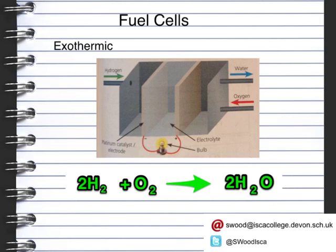Now we need a bit of explanation as to what's actually happening. We pass hydrogen into our fuel cell, where we have a platinum catalyst electrode. At this electrode, the hydrogen gas becomes a hydrogen ion, and the hydrogen ion is allowed to pass through into the electrolyte. On the opposite side, we have the oxygen coming in, and the oxygen is able to gain electrons from this electrode. When the hydrogen comes from one side and the oxygen from the other, it reacts to form water, which can be taken off as a non-pollution product.